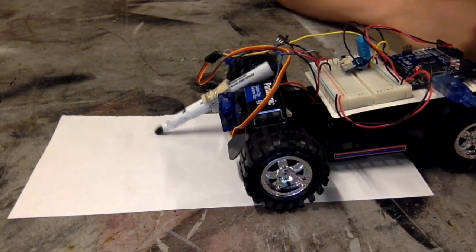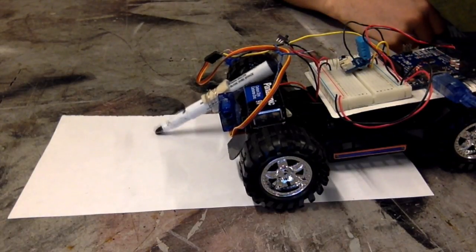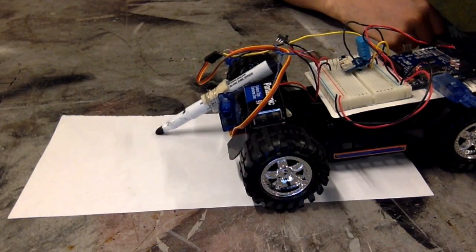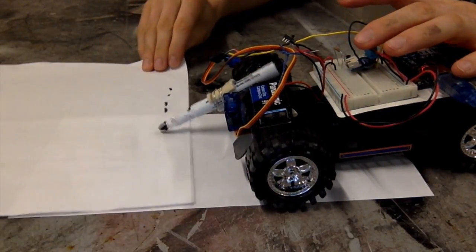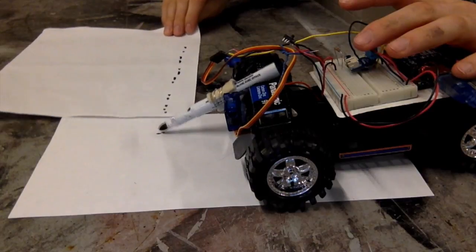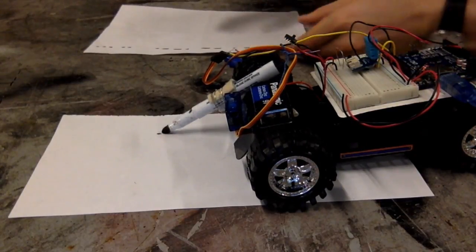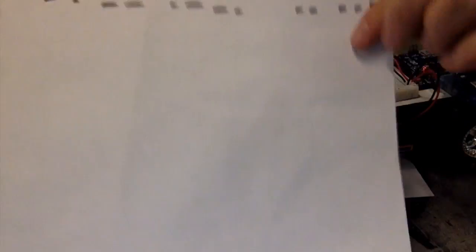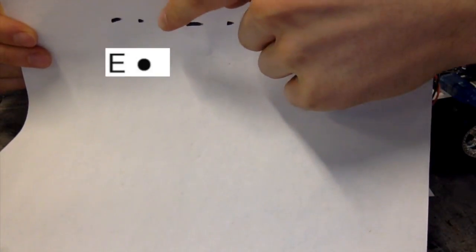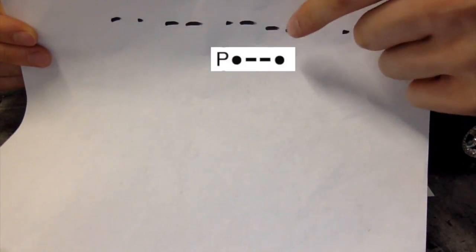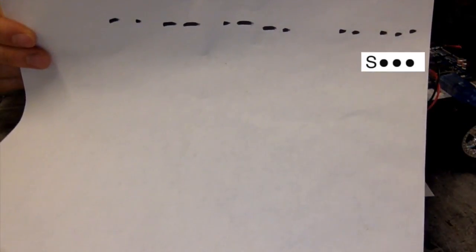Now we want to test out the servo arm to make sure that the angles and the timing are correct. As I drag this paper underneath it, we can see it writing. And if we read it out, that spells out T-E-M-P-I-S, temp is.